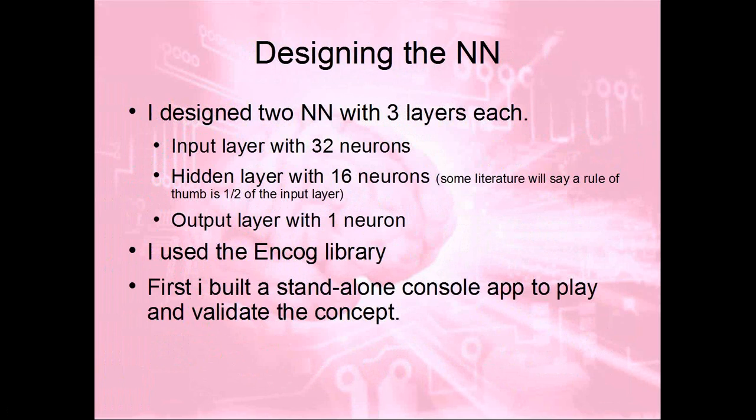The next step was to design the neural network. That's quickly said, but it involved a lot of discussion and trial and error. The input layer is easy: if you have 32 elements — our 32 points from A, B, C, D (four times eight) — that's the input. For the hidden layer, literature says if you go from 32 to 1, the middle layer could be half — so 16 neurons as a starting point. The output layer is just one neuron. I wanted my neural network to say yes or no — is this a good trade or a bad one? I used the ENCOG library, which is freely available. I found a lot of examples and material to learn from.